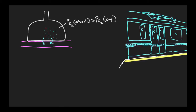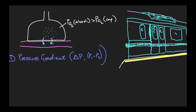So let's write that down as one of our factors: the pressure gradient. That can sometimes be called delta P, or written as P1 minus P2. What else is going to affect the volume of gas that we can diffuse across this barrier?